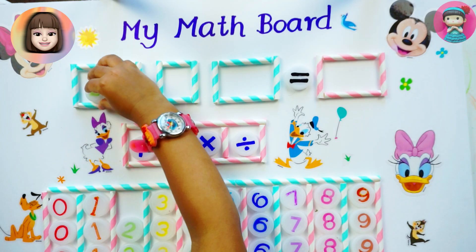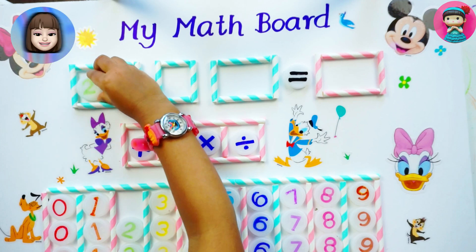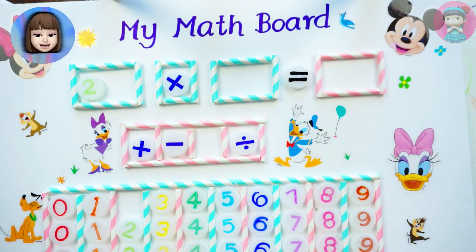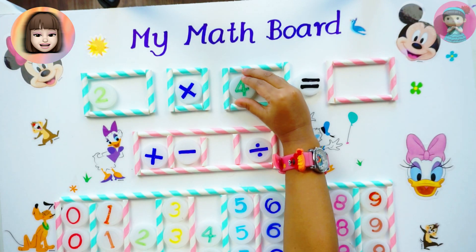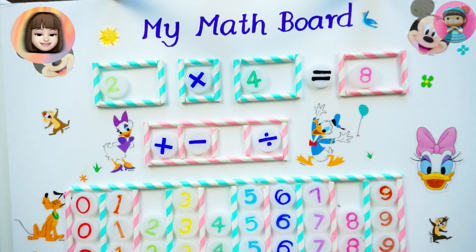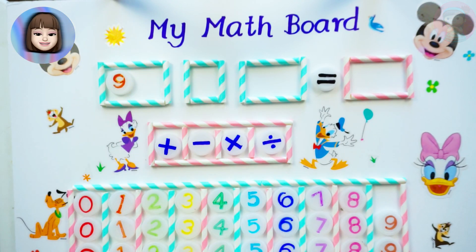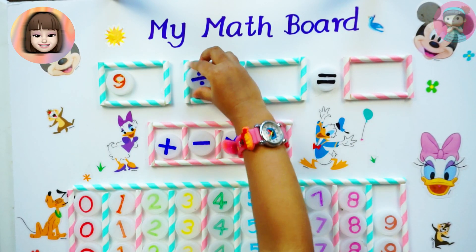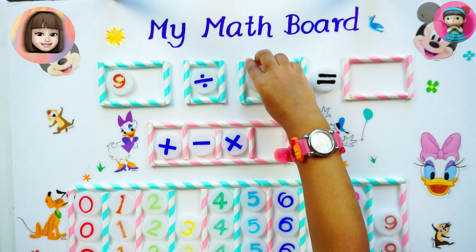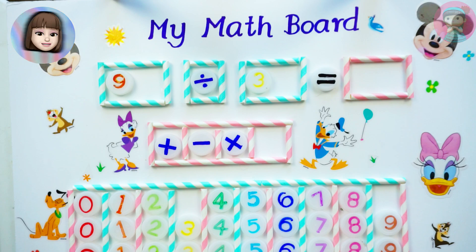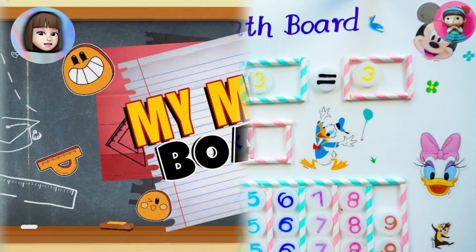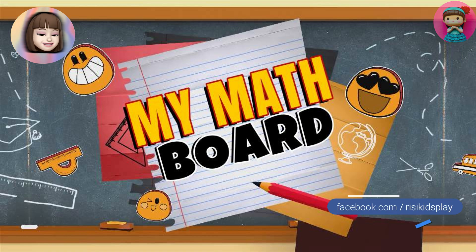Now, let's turn to multiply. 2 into 4 equals 8. You're doing good. Keep going. Next, 9 divided by 3 equals 3. Good job. Keep practicing.